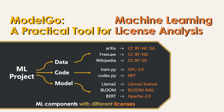For instance, an article from arXiv might be licensed under CC BY-NC-SA, while content from Wikipedia could be under CC BY-SA. Similarly, the modeling code and the model itself may have different licenses.